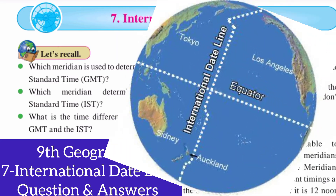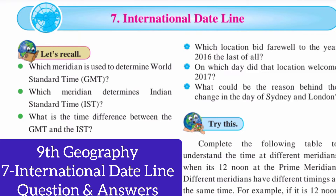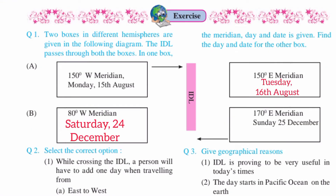Now we are going to solve the question answers from the exercise. Question number 1: Two boxes in different hemispheres are given in the following diagram. The dateline passes through both the boxes. In one box, the meridian day and date is given. Find the day and date for the other box.